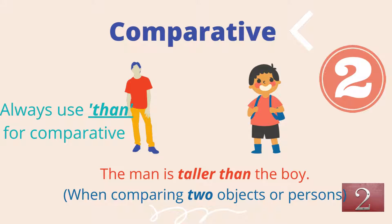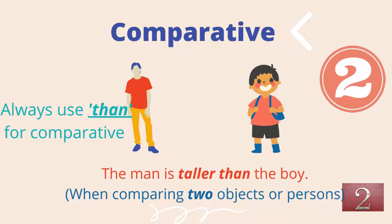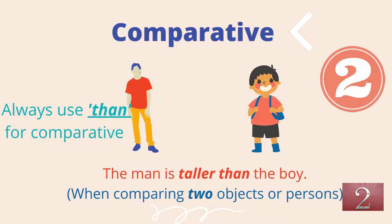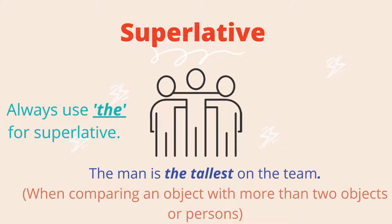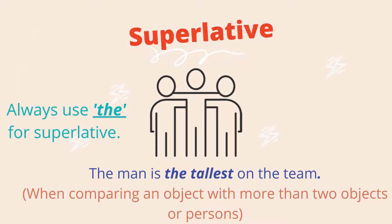There are three degrees: positive, comparative and superlative. When we compare only two objects or persons, it comes under the comparative degree. You should always use 'than' for comparative sentences. When we compare an object or person with more than two objects, it comes under the superlative category. You should always use 'the' before the superlative word.